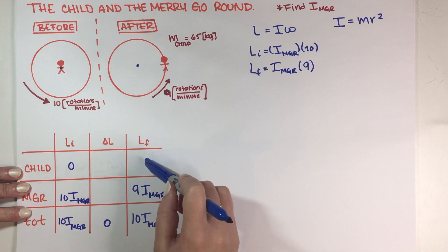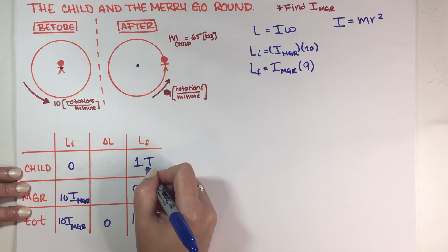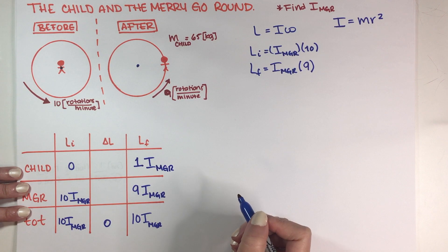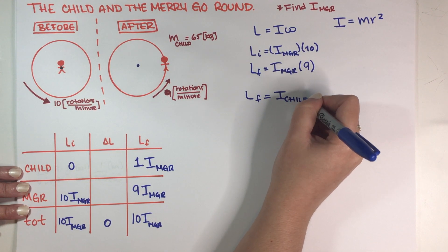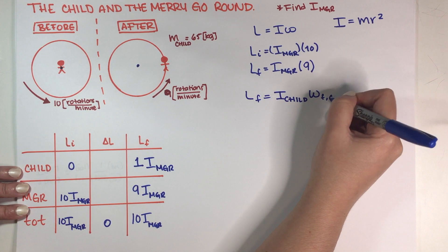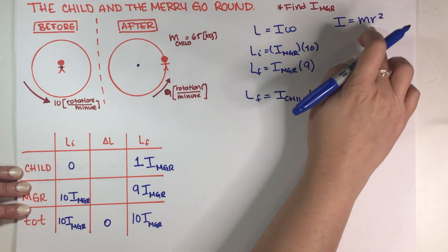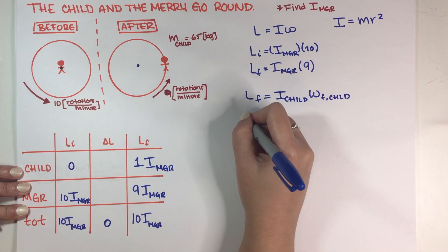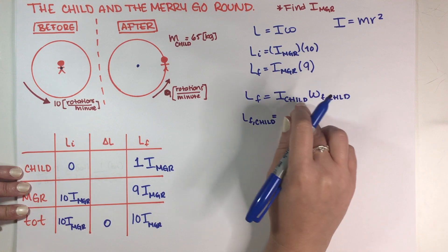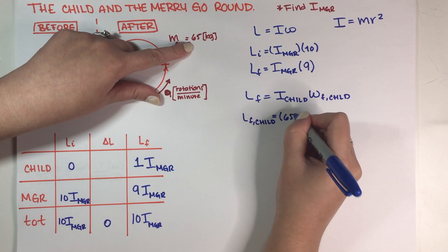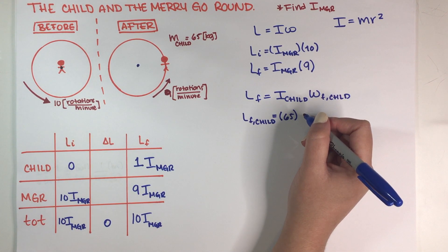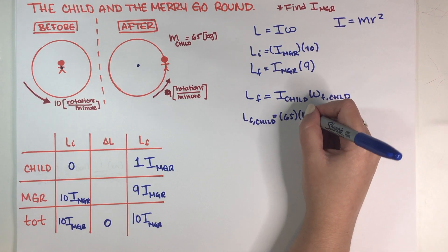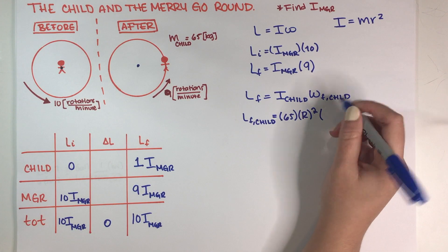Because the initial total plus zero must equal the final total, we get that the difference is 1·I_merry-go-round. This also equals the rotational inertia of the child times his final angular velocity. So L-final for the child equals mass of the child (65 kg) times r² from the pivot point to the child, times 9 rotations per minute.